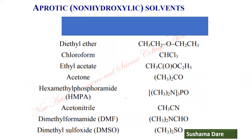In aprotic solvents, hydrogen is not attached to the electronegative atom. Examples include diethyl ether — where hydrogen is attached to carbon, not oxygen — and chloroform, where hydrogen is attached to carbon, not chlorine. When the proton is not attached to the electronegative atom, these solvents are called aprotic or non-hydroxylic solvents — polar aprotic solvents. For further details, refer to the books.